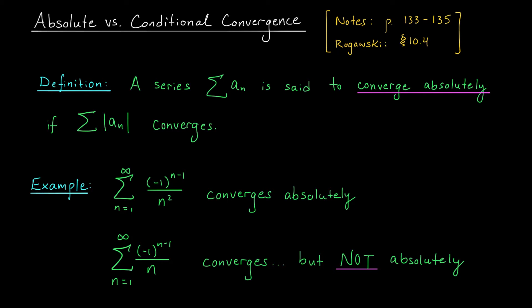Do they converge absolutely? In the first case, the answer is yes. If I take the absolute value of these terms, I get 1 over n squared, and the sum of these terms is a convergent p-series. So this series converges, and therefore my original series converges absolutely. What about the second series? Here the answer is no, it does not. When I take the absolute value of the terms, I get 1 over n, and the sum of those terms is the harmonic series — we know that diverges. So in each case we have a convergent series, but one converges absolutely and the other does not.